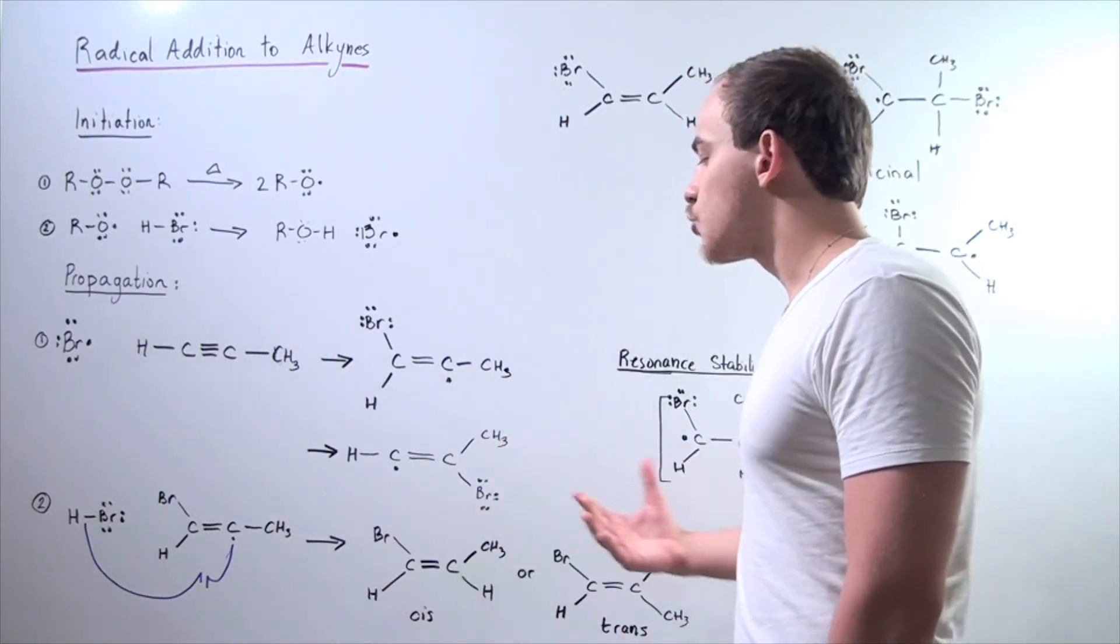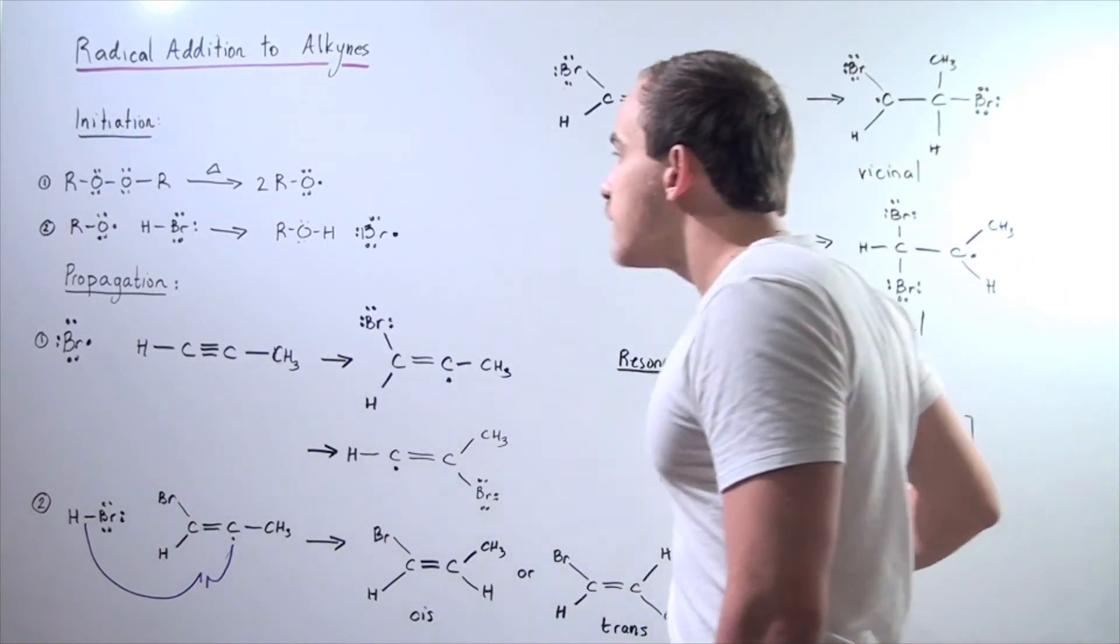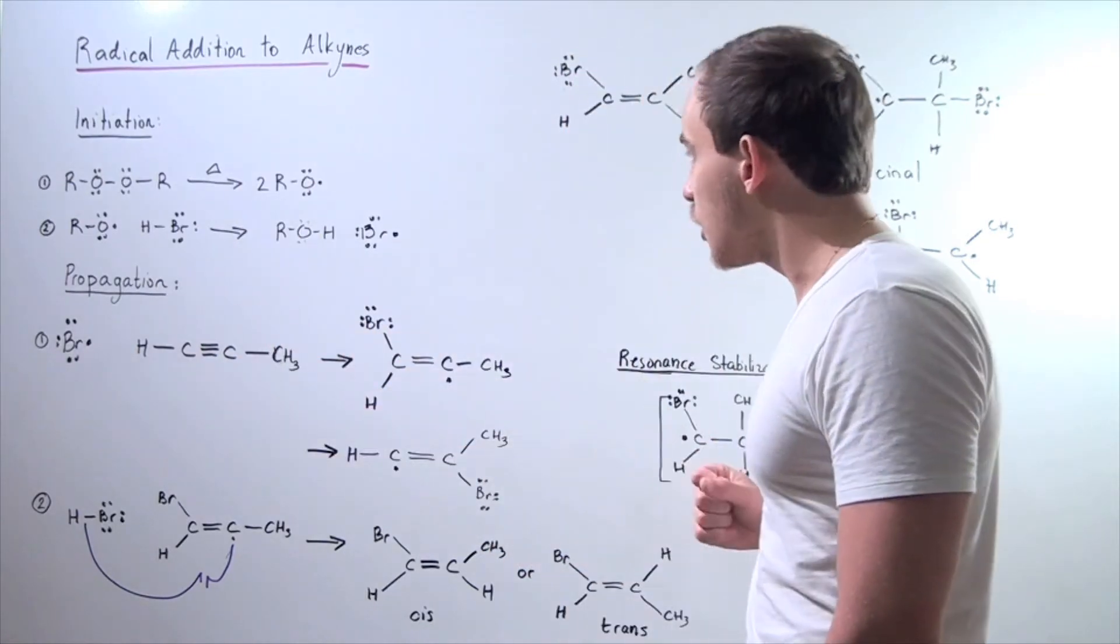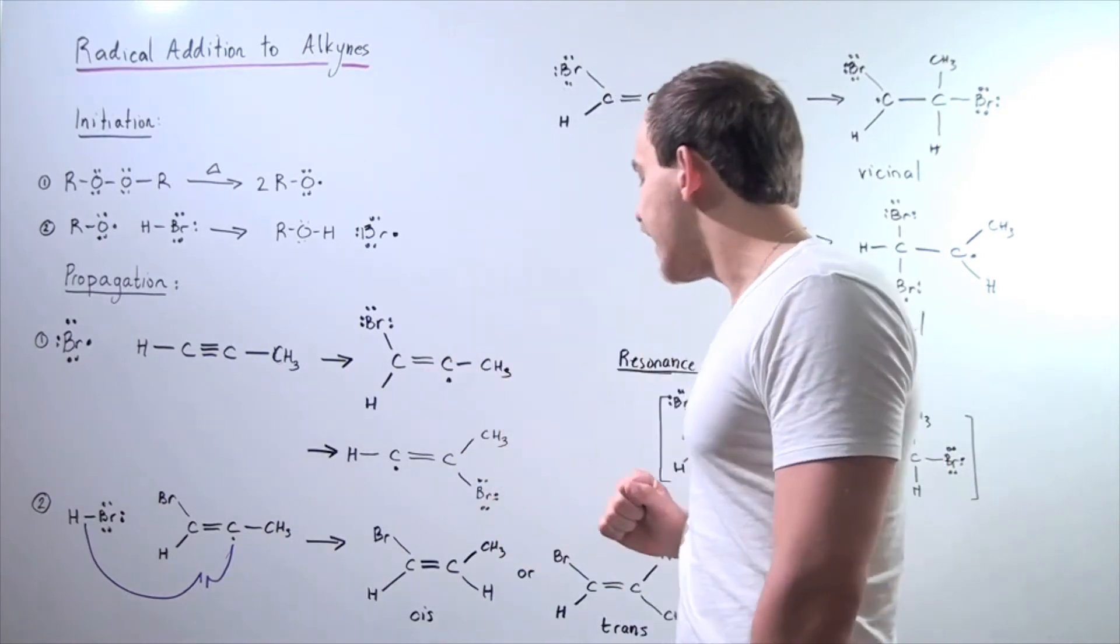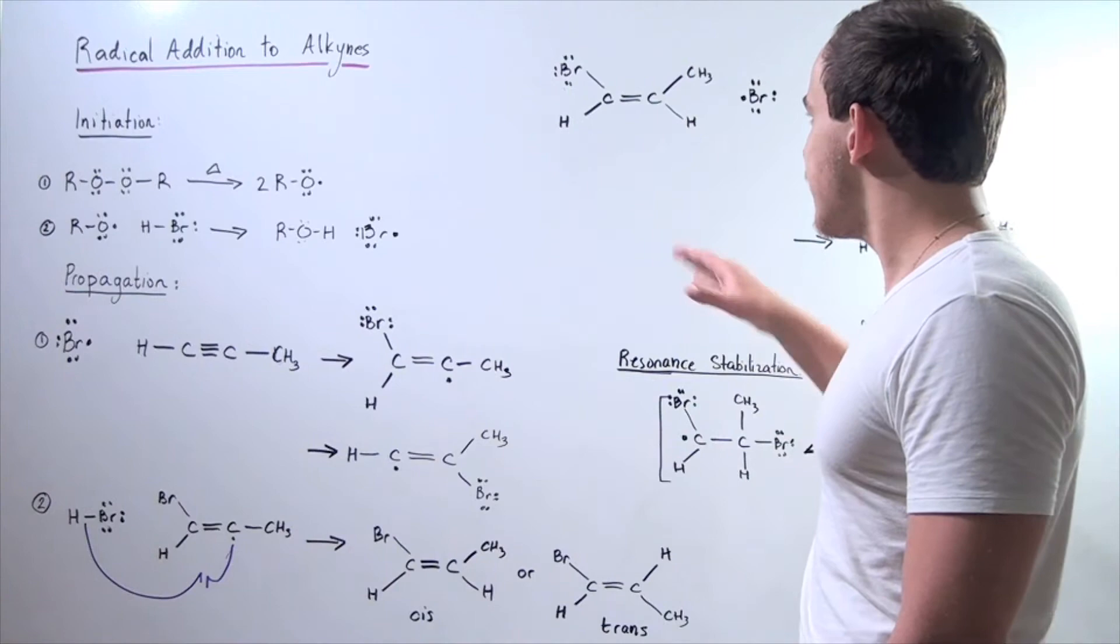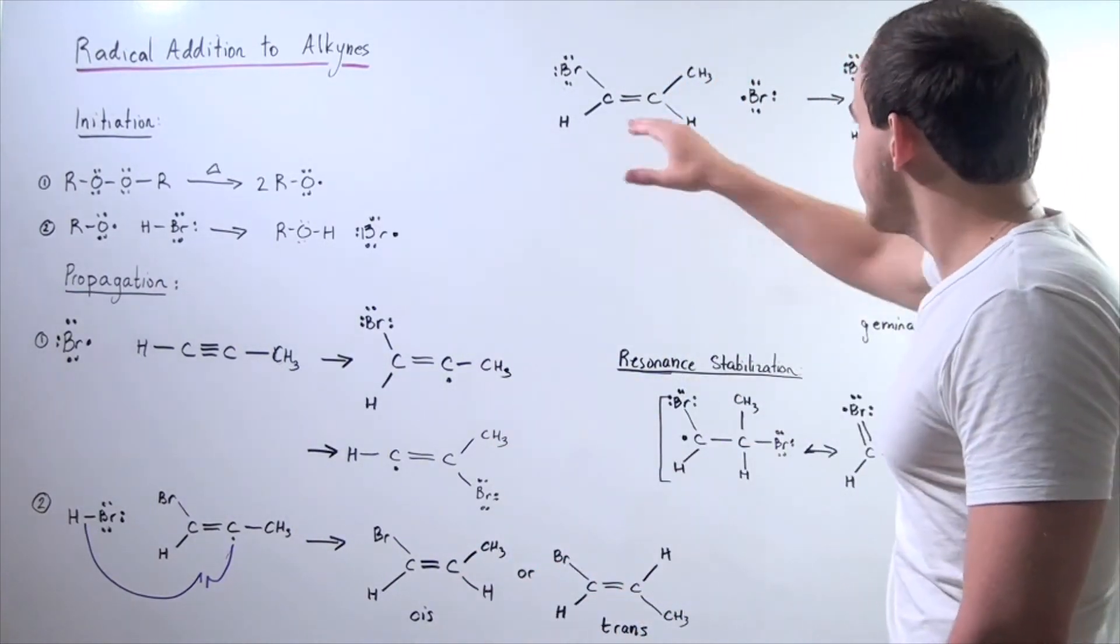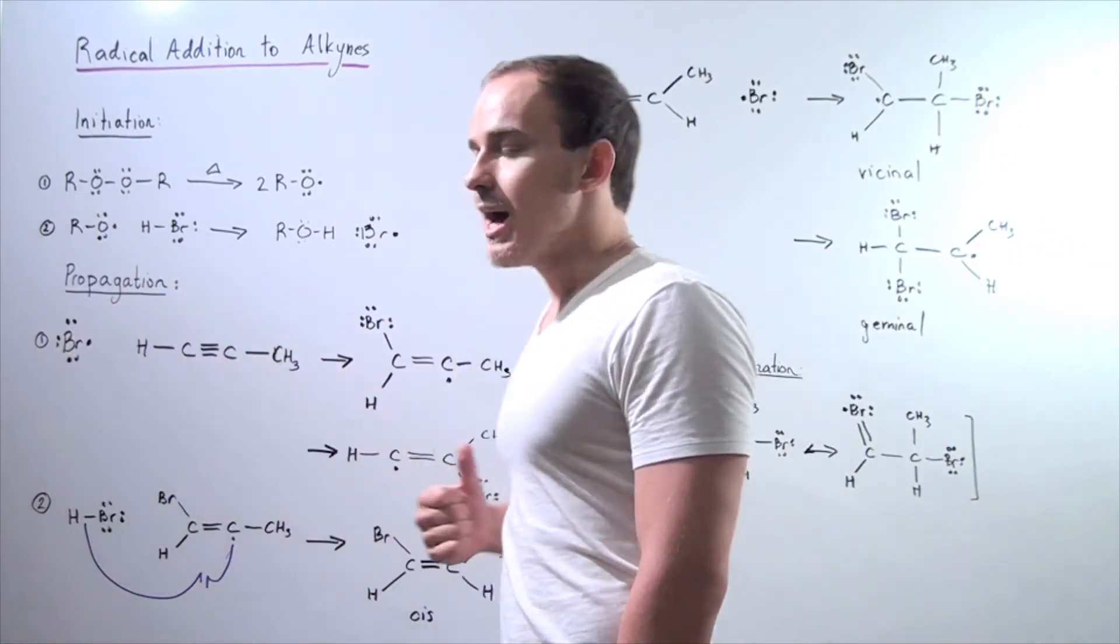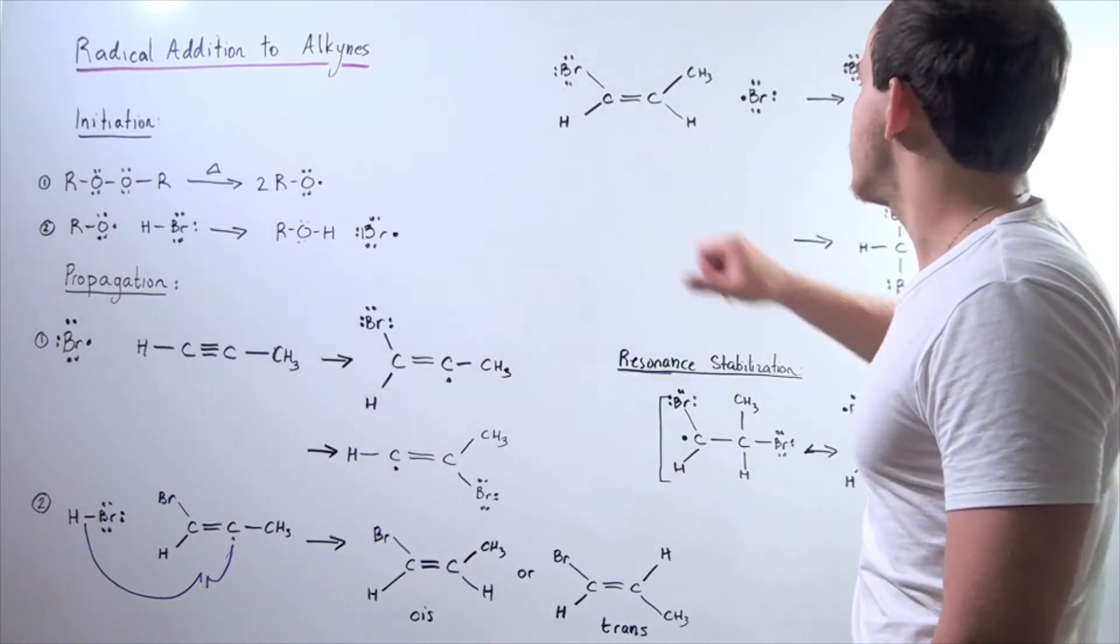Now in fact, this radical reaction can continue because remember, we can add our radical addition to alkynes as well as to alkenes. So let's choose any one of these alkenes. Let's say we choose cis. So here we have the cis molecule and let's add another chain radical bromide. So here we have the bromide radical along with our cis molecule.